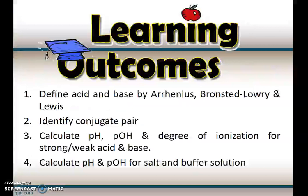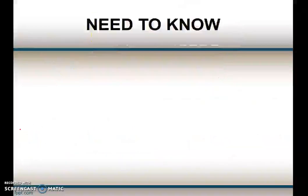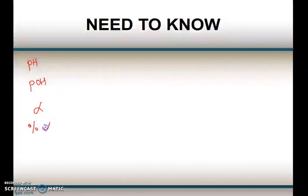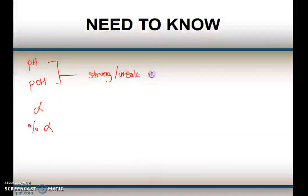This is the learning outcome. At the end of this part, you should be able to calculate the pH and degree of ionization for strong acid and weak acid and base. What we need to know is: calculations involving pH, pOH, degree of ionization (alpha), and percent of ionization. pH and pOH involve strong and weak acid and base, while degree of ionization involves weak acid and base only.